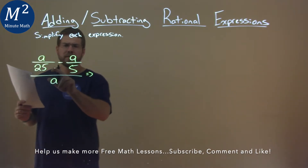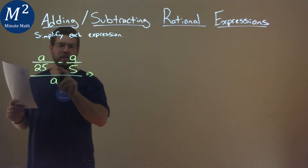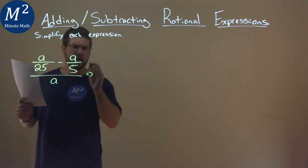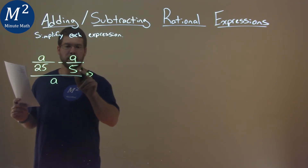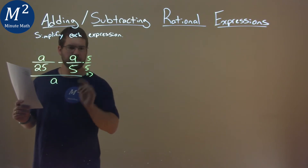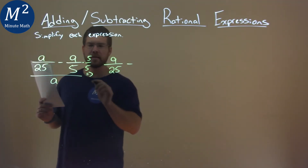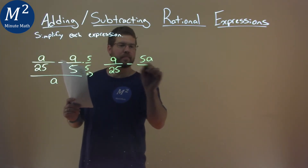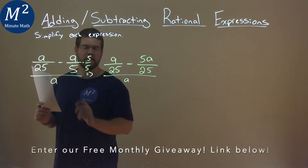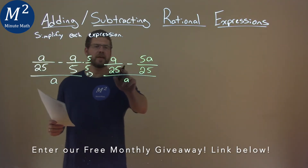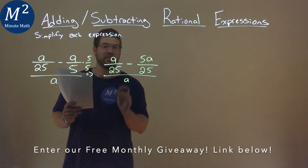I want to deal with my numerator first — the main big fraction. I have to combine these, but I need the same denominator. So I'm going to take this right-hand side, which is a over 5, and multiply it by 5 over 5. We have a over 25, minus a times 5 is 5a, over 5 times 5 which is 25. We're still over the a that's down here. That gives me the same base, which allows me to combine that fraction.